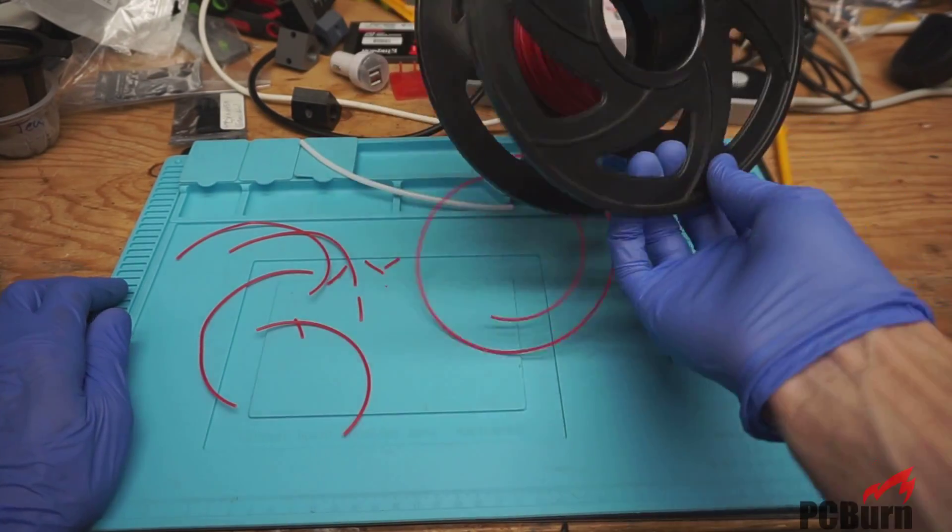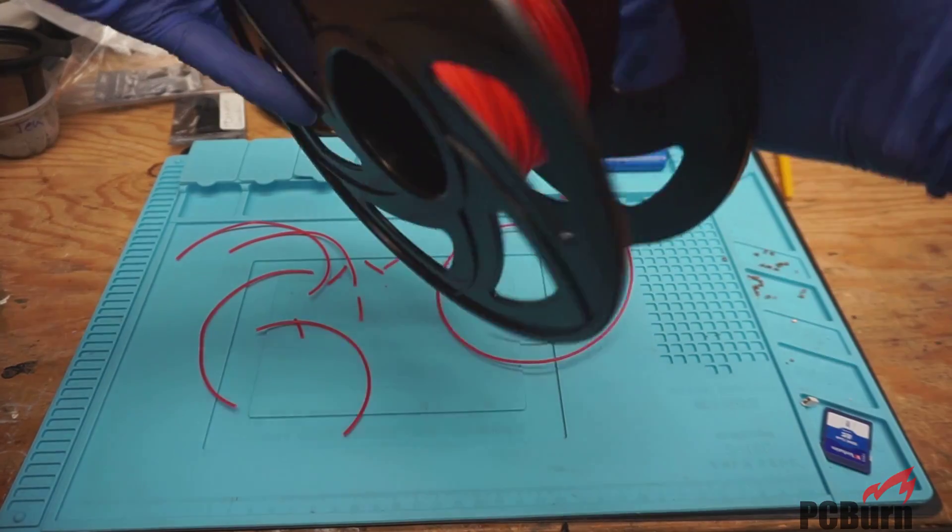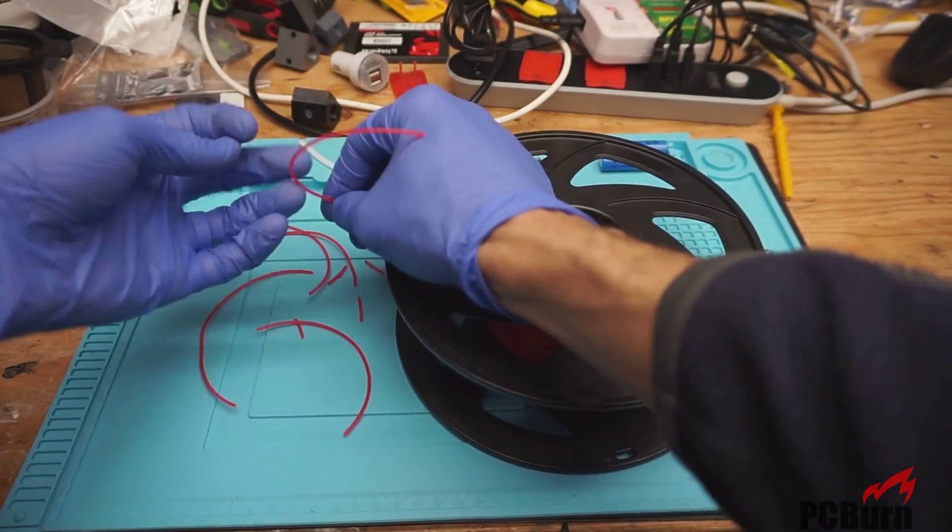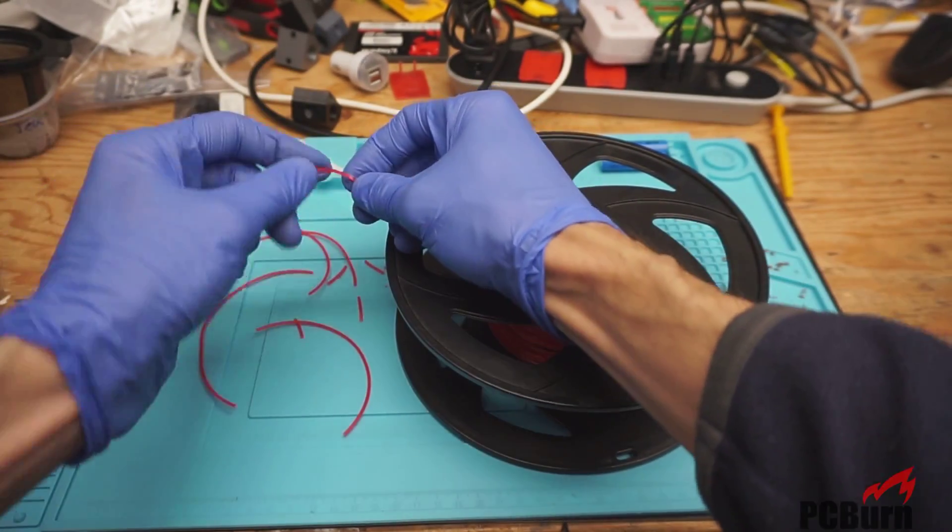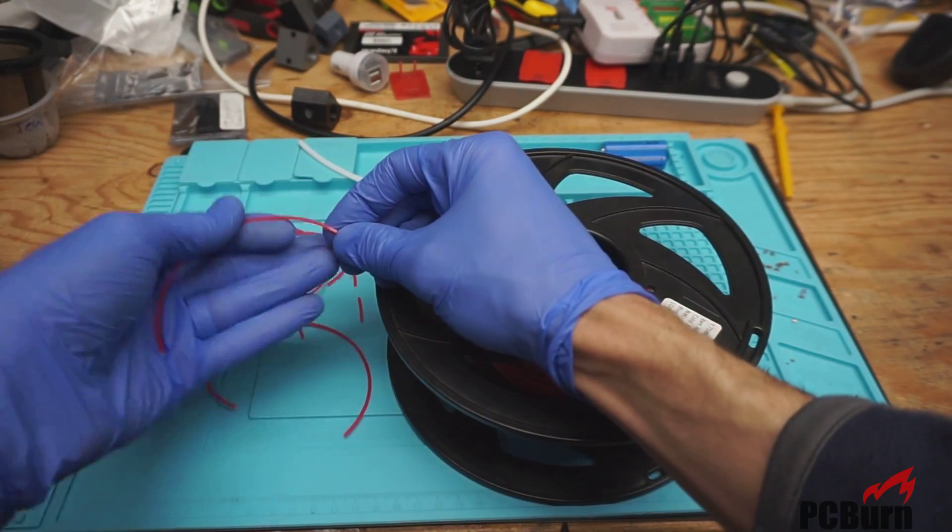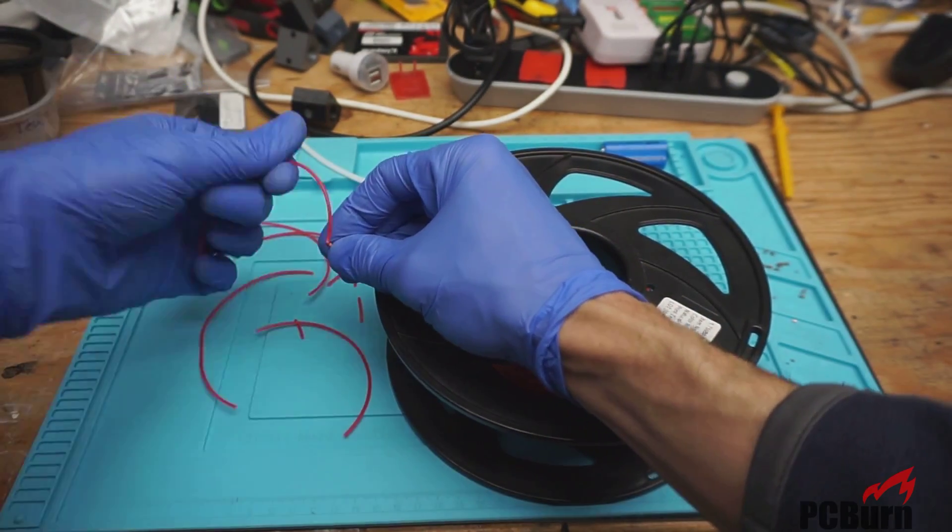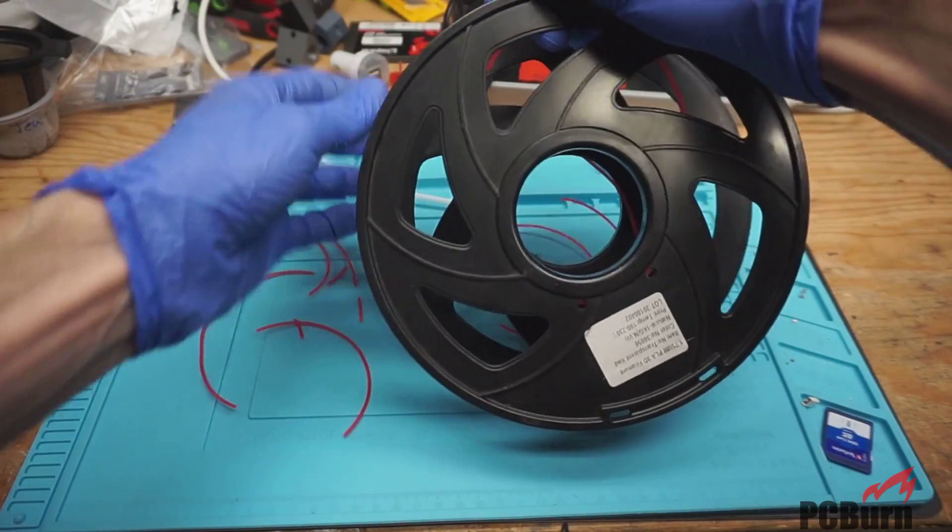Because here's the filament roll. And this has been sitting out for a couple of months while I've been using it. And this is still very firm. As you can see, I can't actually break that at all. It's just flexing like plastic, like you'd expect plastic to. And it doesn't break, doesn't get fragile.